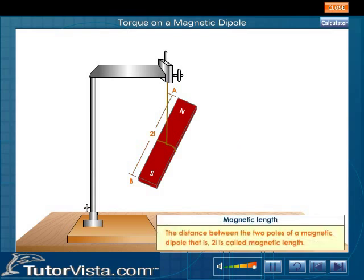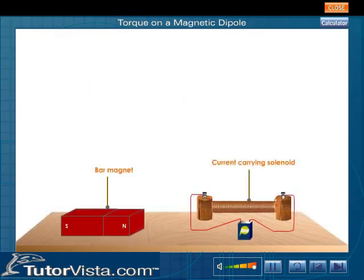The distance between the two poles of Magnetic Dipole, that is 2L, is called the Magnetic Length. A bar magnet and a current carrying solenoid are Magnetic Dipoles.